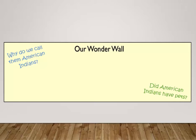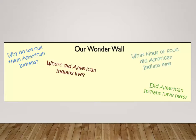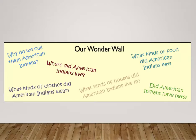Because this is a structured inquiry lesson, the teacher will select some specific student questions from the Wonder Wall as the focus. It is likely that some students asked questions such as, where did American Indians live? What kinds of food did American Indians eat? What kinds of clothing did American Indians wear? And, what kinds of houses did American Indians live in? These questions will become the focus of the upcoming inquiry activities.